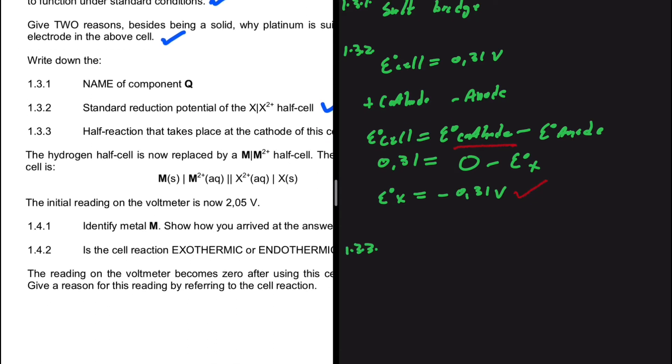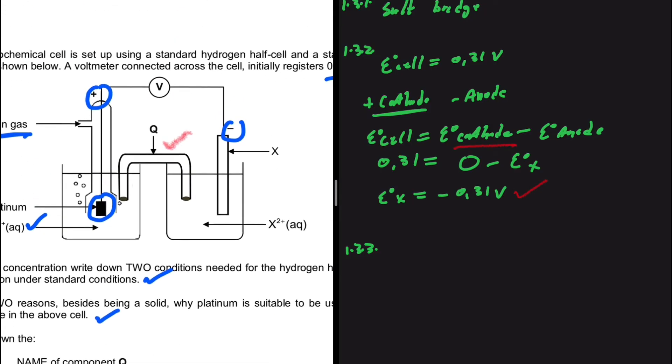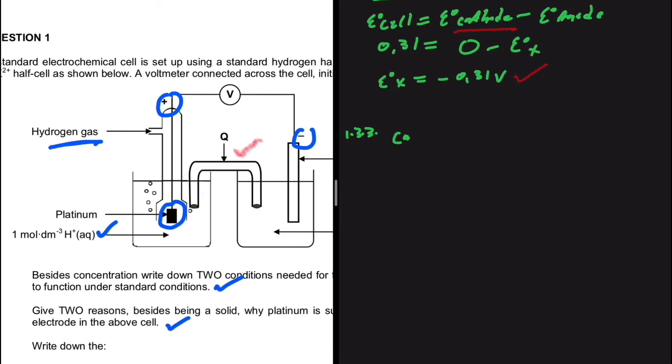1.3.3, the half reaction that takes place at the cathode. The cathode is the positive terminal on our galvanic cell, so we have the hydrogen gas. At the cathode, it's where reduction occurs. What is reduction? Reduction is the gaining of electrons. So we're going to have 2H+ plus 2 electrons to give us hydrogen gas H2. This is the equation you find on your table of standard reduction potentials.